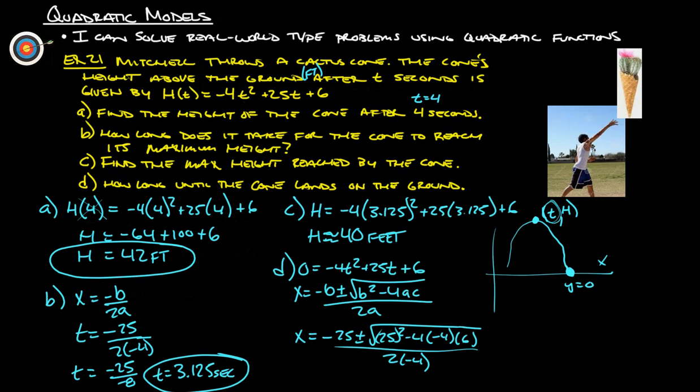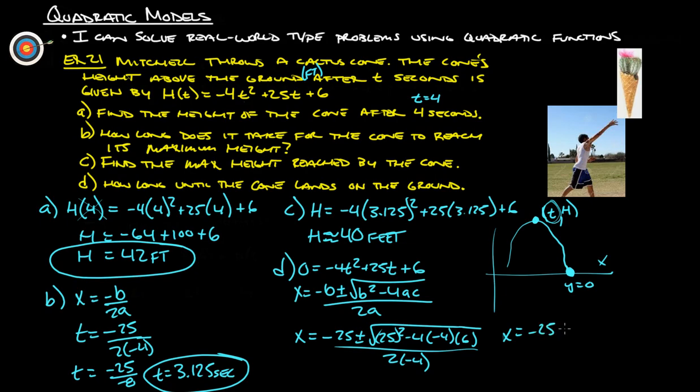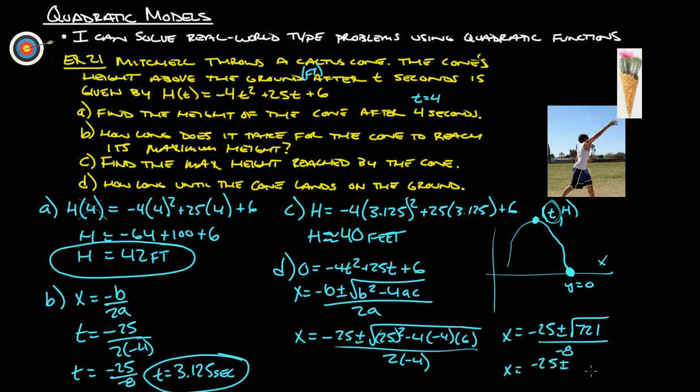So, what we're going to do is we're really just going to plug this whole thing in, and away we go. So, I'm going to just find out what's under the radical first. So, let's do 25 squared minus 4 times negative 4 times 6. And that gives us 721. So, we have x equals negative 25 plus or minus the square root of 721 all over 2 times negative 4 is negative 8. So, if we figure those out, we've got, let's do square root of 721, and we get 26.85, we'll call it. So, negative 25 plus or minus 26.85 all over negative 8, right?